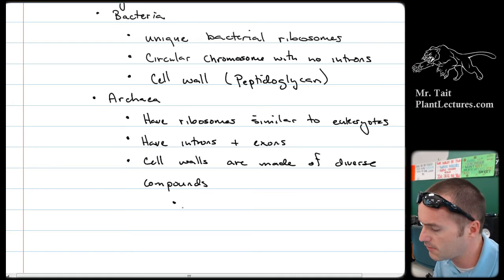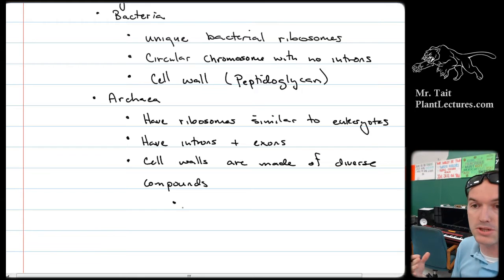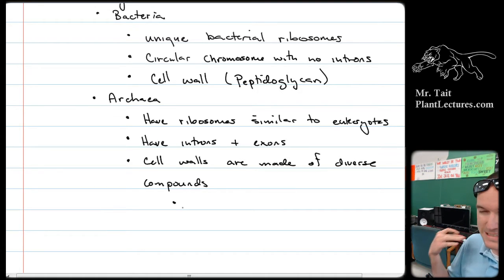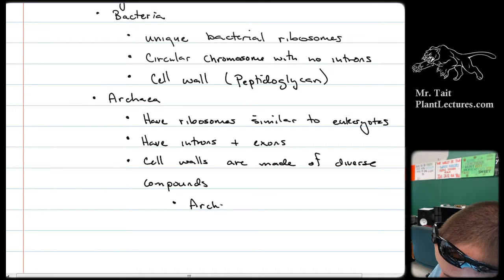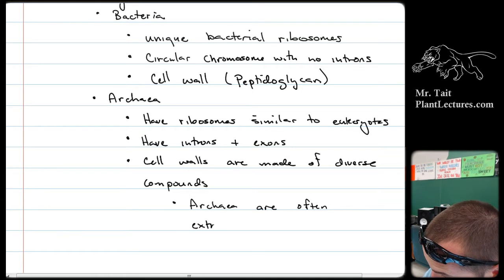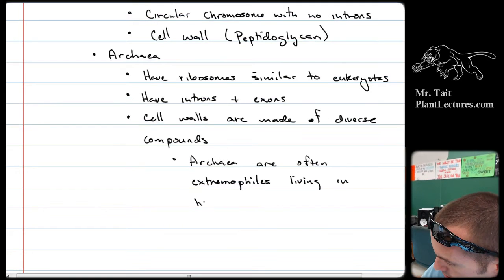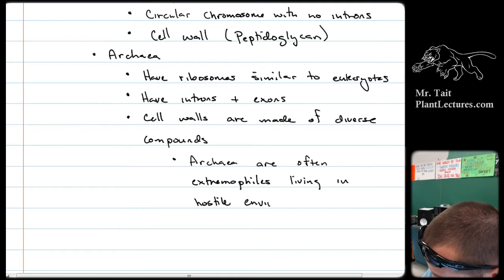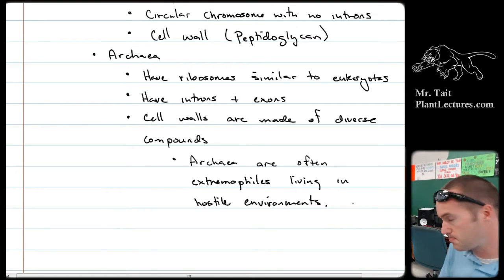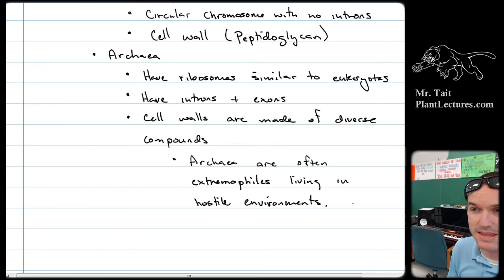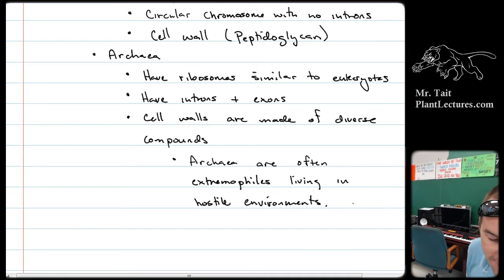Along with having diverse cell walls made of diverse compounds, those compounds allow archaea to specialize. One of the things archaea are known for is specializing in living in extreme environments that nothing else can survive in — we call them extremophiles. They can live in hostile environments: extreme temperatures, whether very hot or very cold, and extreme salt concentrations. We call those halophiles — they can live in places like the Dead Sea that have really high salt concentrations that most life couldn't tolerate.